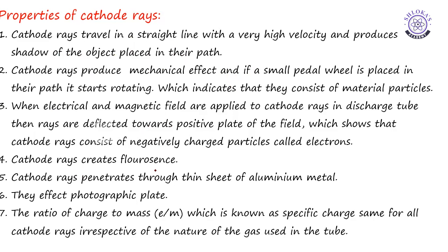Cathode rays create fluorescence. Fluorescence means there is a substance which is called as zinc sulfide. When this zinc sulfide screen is coated, whenever a charged particle hits this screen it will give spark, then we come to know that something is present in the tube that is charged. Cathode rays penetrate through thin sheet of aluminum metal. They affect photographic plate. The ratio of charge to mass, e/m, which is known as specific charge, is same for all cathode rays irrespective of the nature of the gas used in the tube. Out of seven properties, these four are very very important for competitive examination. One, two, three, and seven are not that much important but for theory purpose they may be important.